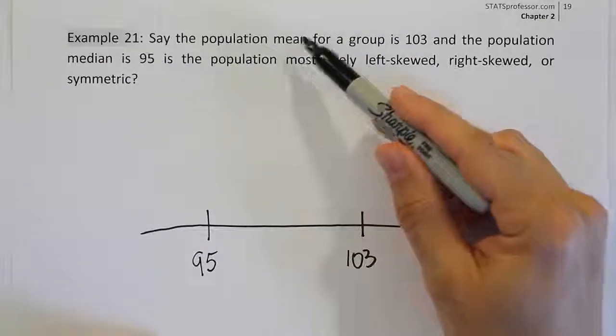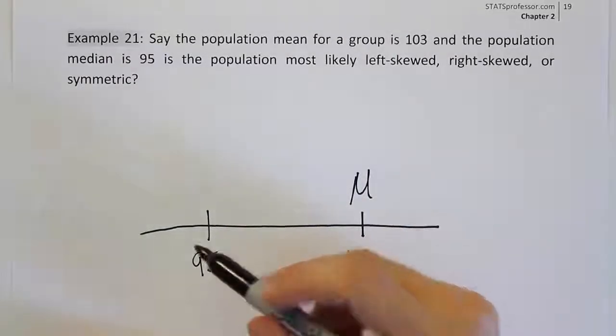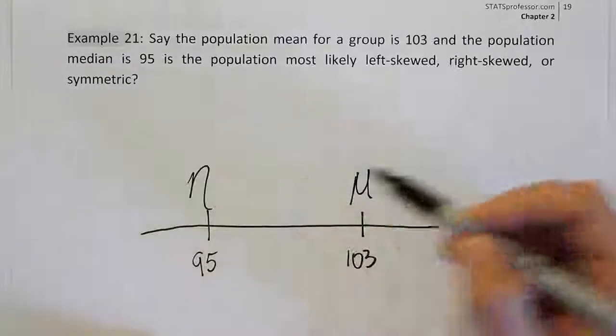And then we just have to label what that number was. So 103 was the mean it says, right? So that's our mean. And 95 is the median, the population median, eta.